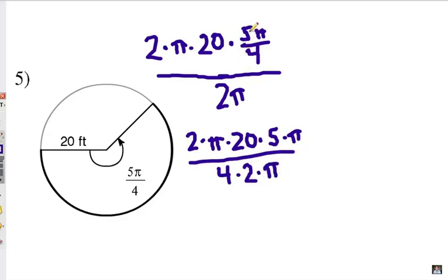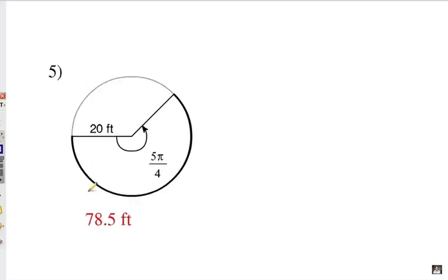Alright, so again, if my central angle is a fractional version of π, the denominator can bump down to this denominator with the 2π, which is the complete rotation around the circle. Let's go ahead and cancel out some factors. Cancel out the 2s, the π's. Cancel out a factor of 4 there. Which gives me 25π. And when I multiply 25 by 3.14, round to the nearest tenth, I get 78.5 feet.